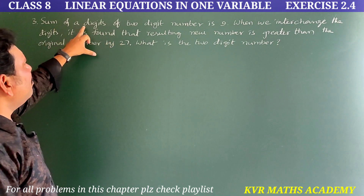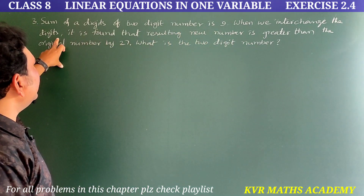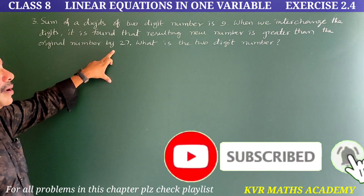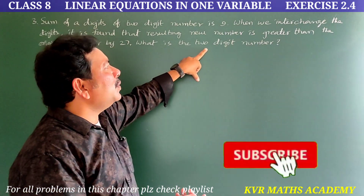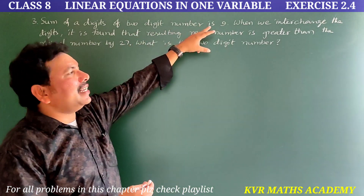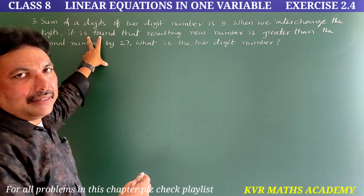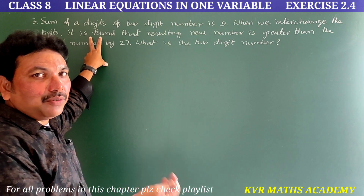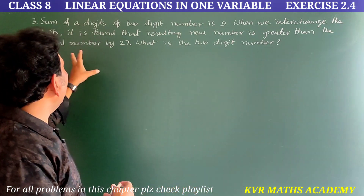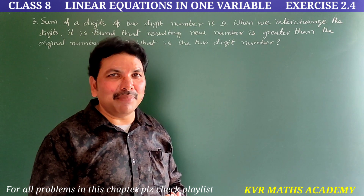Third question. The sum of the digits of a two-digit number is 9. When we interchange the digits — from units place to tens place and tens place to units place — the resulting new number is greater than the original number by 27. What is the two-digit number?